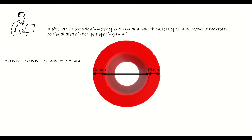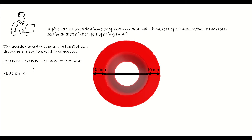Converting that to meters: 780 mm times one meter over 1,000 mm allows us to cancel out the millimeter units, leaving us with meters. 780 divided by 1,000 is 0.78 meters.